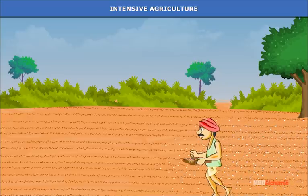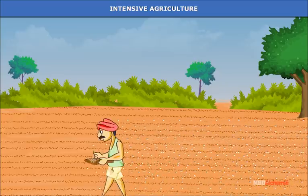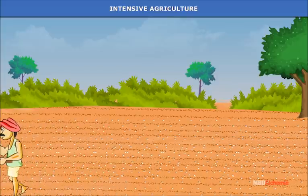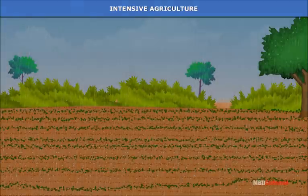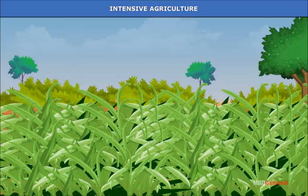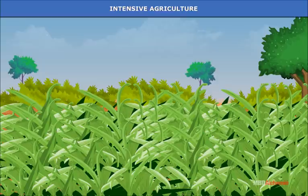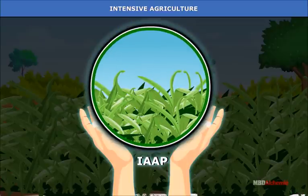Intensive agriculture: Higher light intensity, humid and warm climate, higher inputs of labor and capital as well as use of fertilizers make it possible to raise two or more crops a year on the same plot of land. This not only helps to increase the crop yield but also supports a multiple cropping pattern. The Government of India initiated the Intensive Agricultural Area Programme (IAAP) in the 1960s.